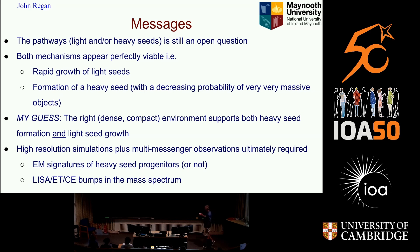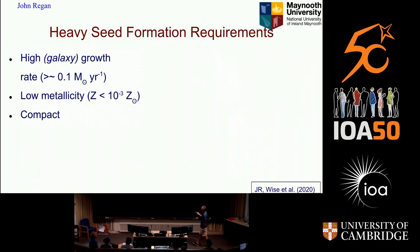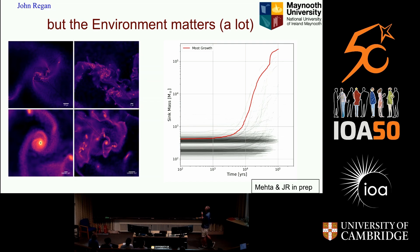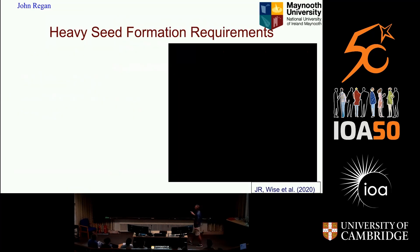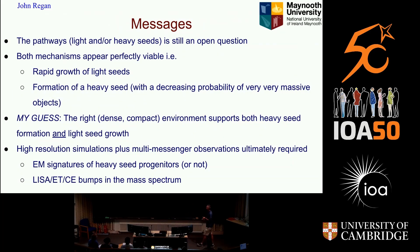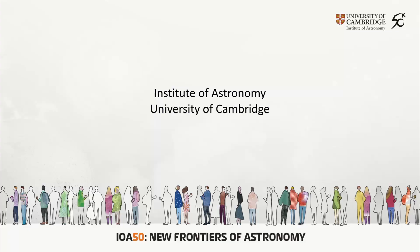One more thing: simulations at the moment typically populate halos with just one black hole, but that's wrong — there are going to be lots. LISA is going to be ringing with these things; they would merge a lot. We'll have synergy with LISA, the Einstein Telescope, and Cosmic Explorer all coming online in the early 2030s, and it should ring with bumps in the mass spectrum around 10^5 solar masses.